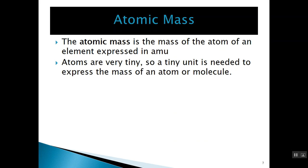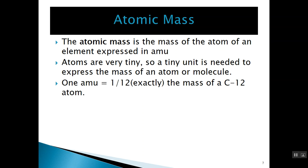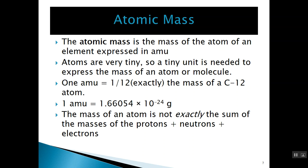Atoms are very small, so we need a small unit to conveniently express the mass of an atom or a molecule. By definition, one atomic mass unit — one AMU — is exactly one twelfth the mass of a carbon-12 atom. One AMU turns out to be equal to 1.66054 times 10 to the minus 24 grams. It's important to note that the mass of an atom is not exactly the sum of the masses of the protons, neutrons, and electrons. We won't go into the reasons now, but in nuclear chemistry you'll see why.